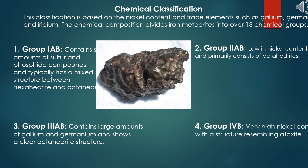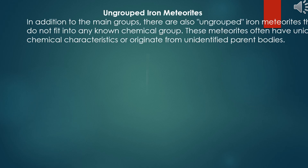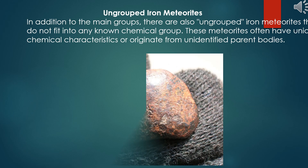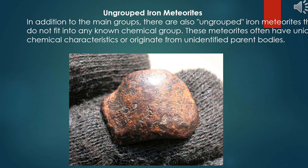Group IVB: very high nickel content with a structure resembling an ataxite. Ungrouped iron meteorites: in addition to the main groups, there are also ungrouped iron meteorites that do not fit into any known chemical group. These meteorites often have unique chemical characteristics or originate from unidentified parent bodies.